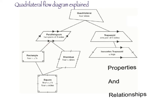Both a rectangle and a rhombus are types of parallelograms, and all of those are quadrilaterals. On the other side, all trapezoids are quadrilaterals, but notice that trapezoids are not connected to parallelograms — parallelograms and trapezoids are separate. We also see a specific type of trapezoid, namely an isosceles trapezoid, which has one set of parallel sides and one pair of congruent sides.